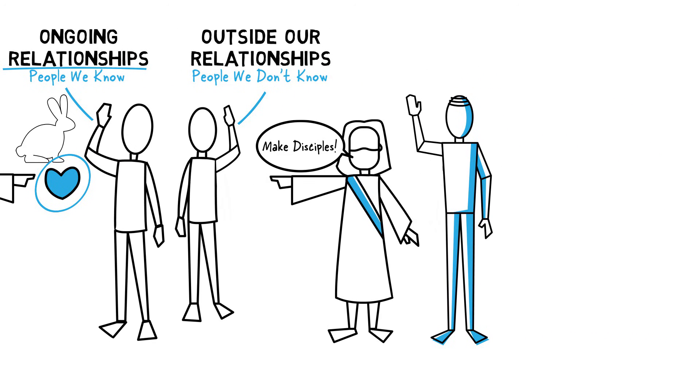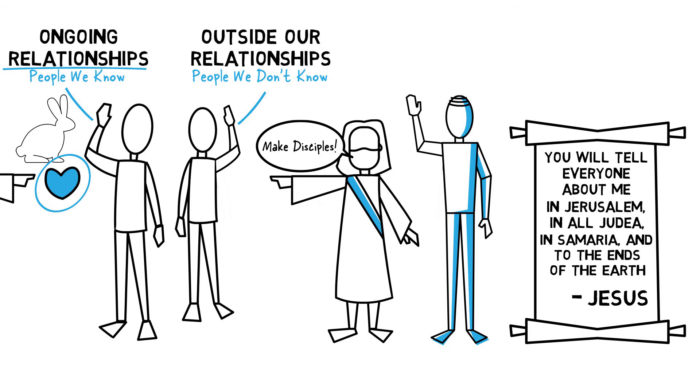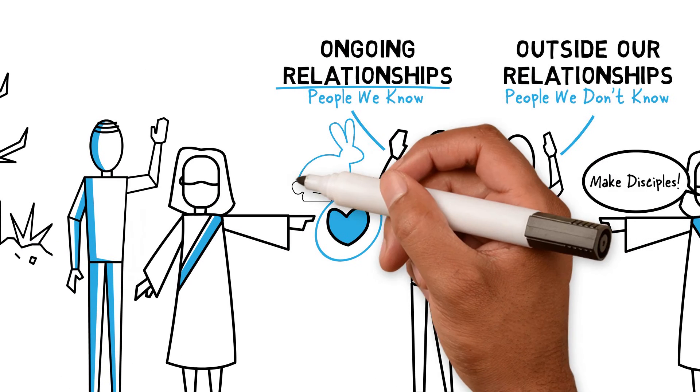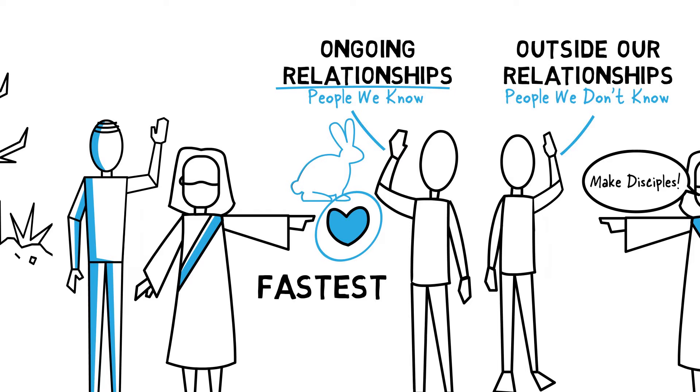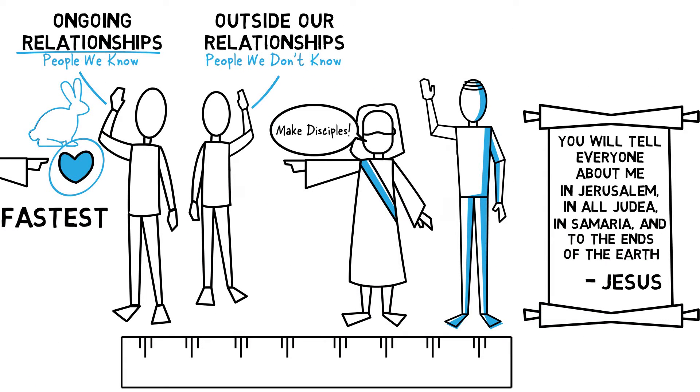Jesus said, make disciples of all nations. Jesus said, you will tell everyone about me in Jerusalem, in all Judea, in Samaria, and to the ends of the earth. Sharing with people we know is the way God's story travels fastest. Sharing with people we don't know yet is the way God's story travels farthest.